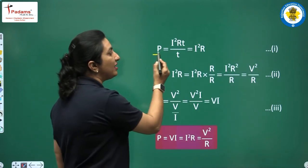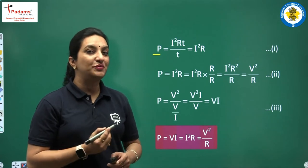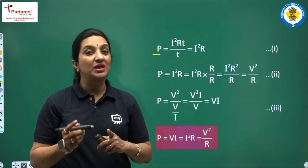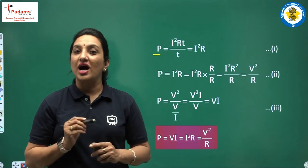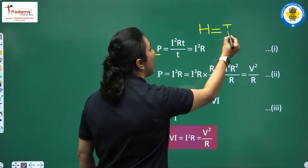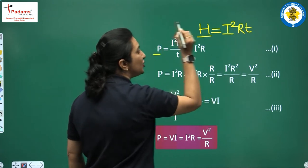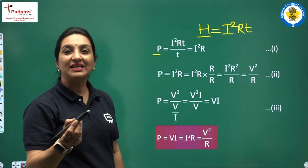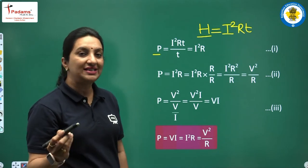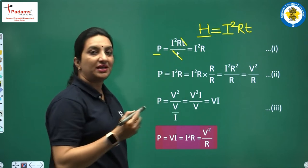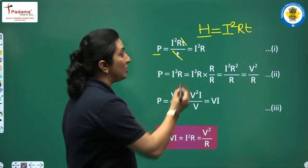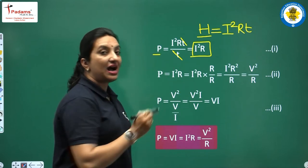Power is work done upon time. In our previous video, we studied that the heat produced — the heat energy given by the work done — was equal to I²RT. So in place of W we write I²RT, and the time cancels out, leaving us with I²R. So power can also be written as I²R.